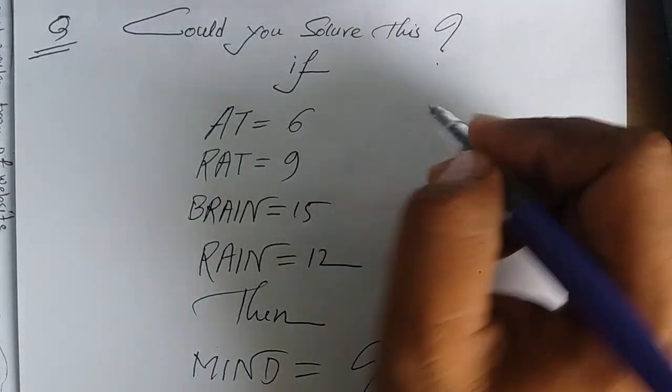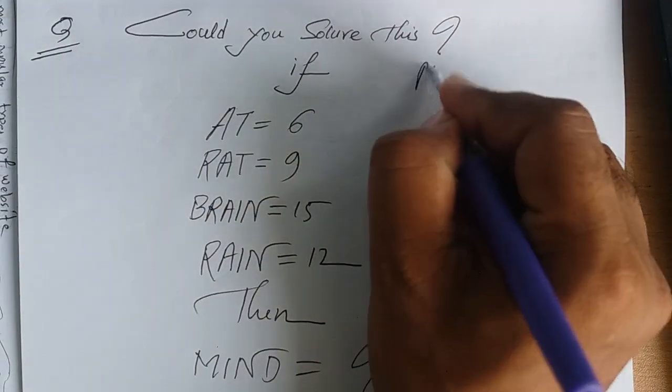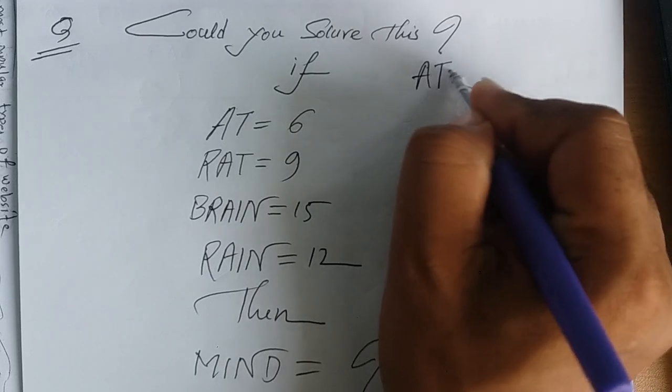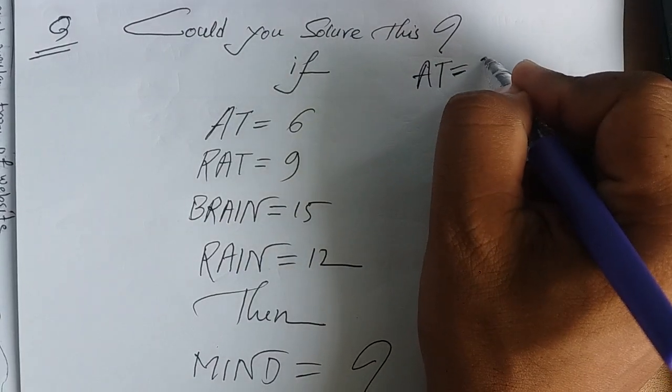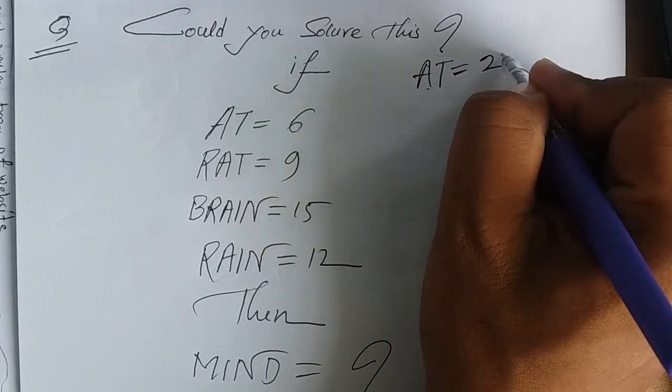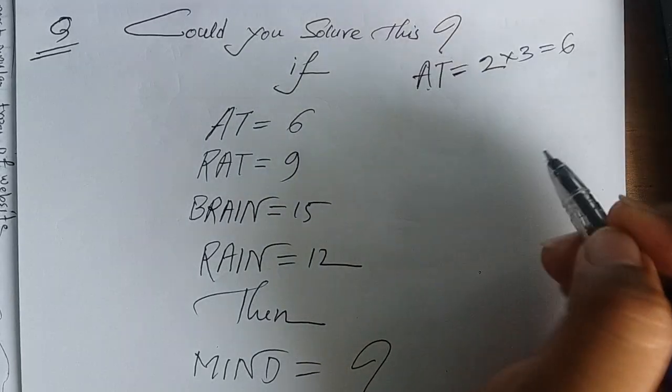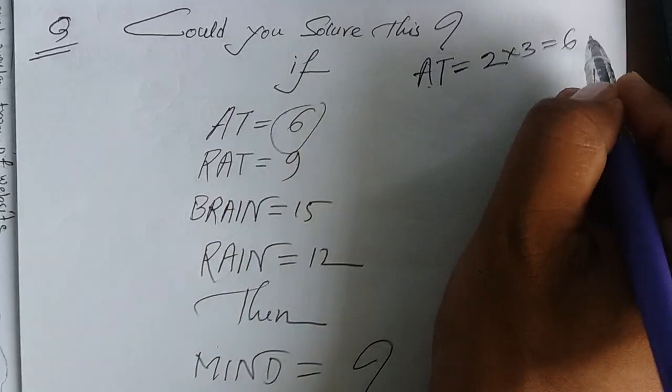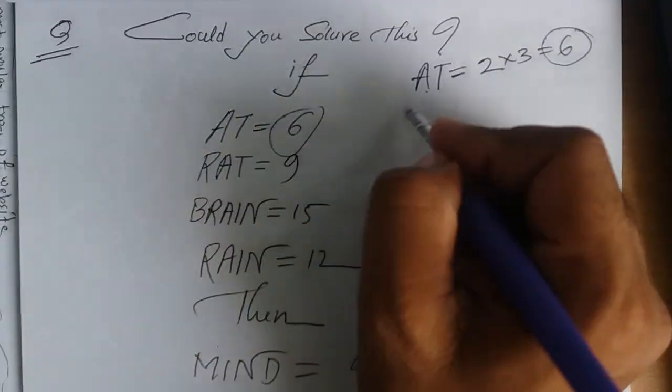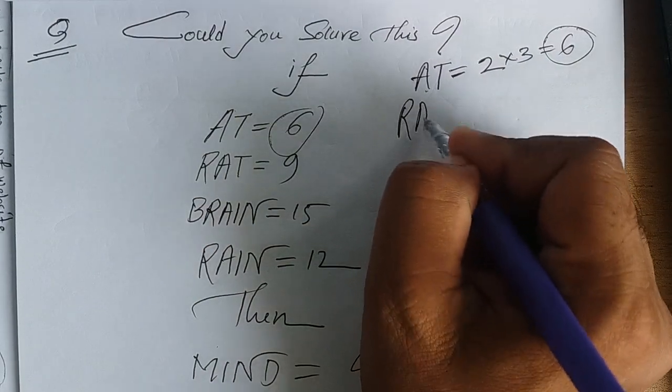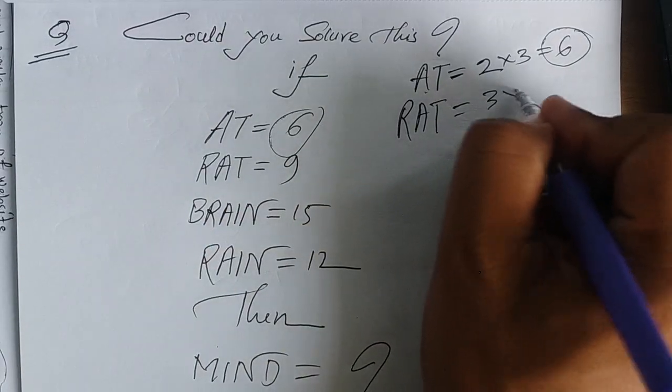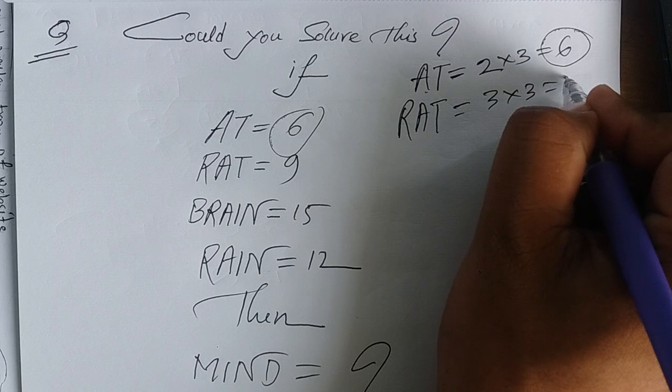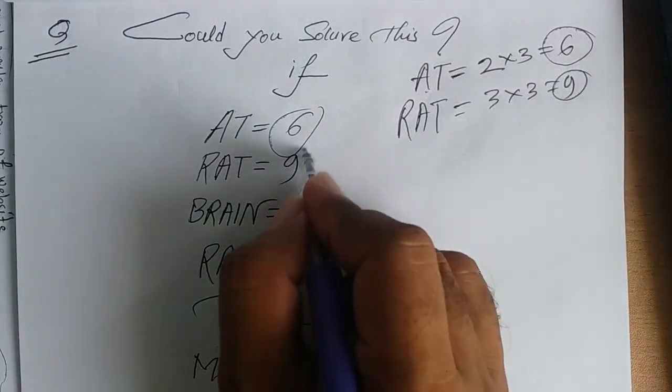Suppose AT - that's 2 letters. A with T, 2 letters, multiply by 3 equals 6. RAT has 3 letters, so 3 multiply by 3 equals 9.